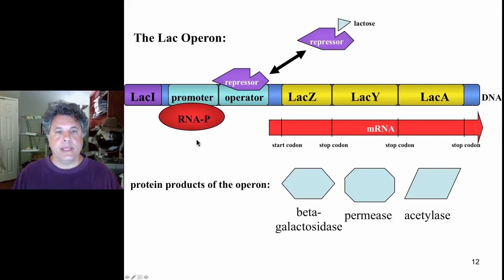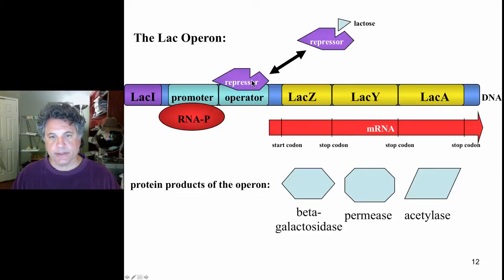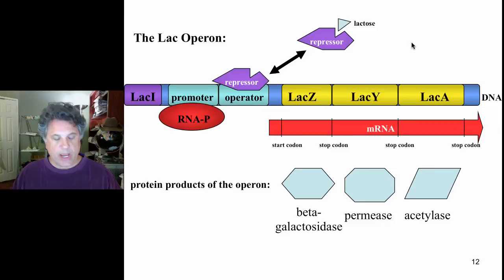We've been considering the elegant mechanism for regulating the transcription of the lac operon in the presence of lactose and the turning off of transcription of the operon in the absence of lactose. This is a great example of catabolic operon gene regulation. Now we're going to introduce one more regulatory element of the lac operon.